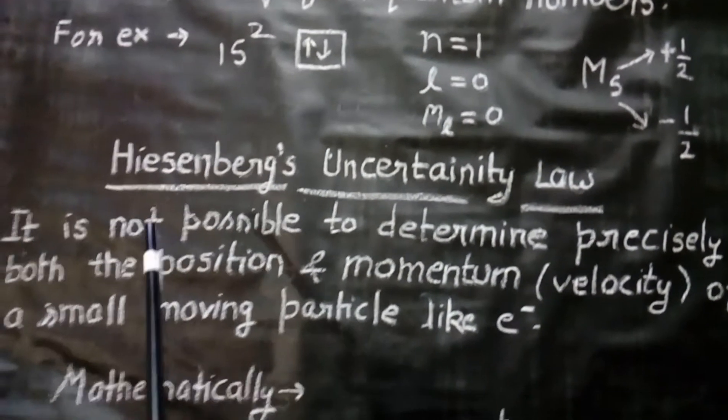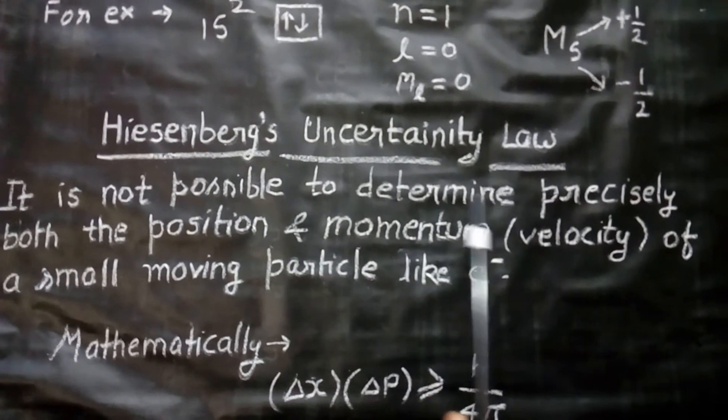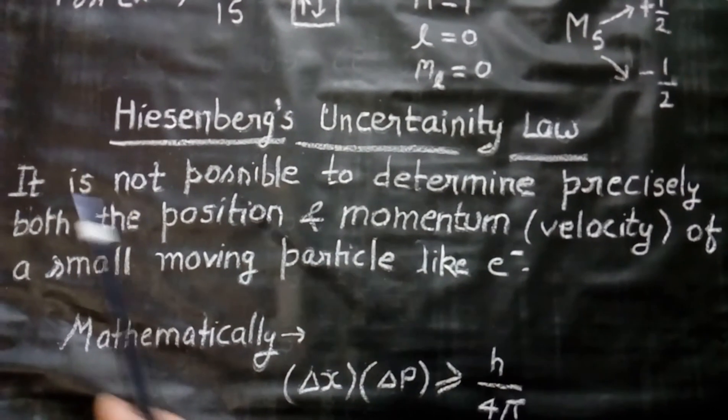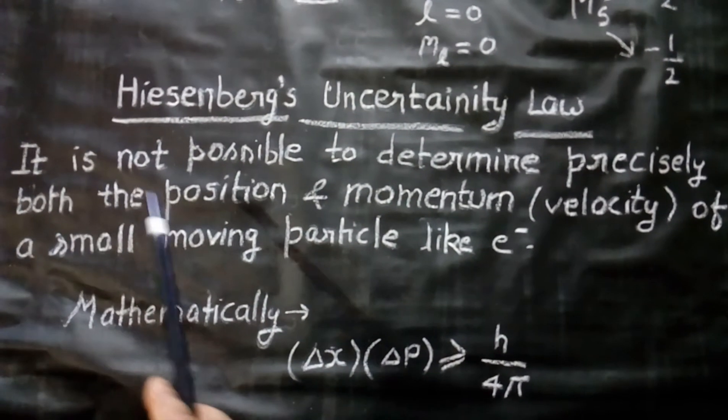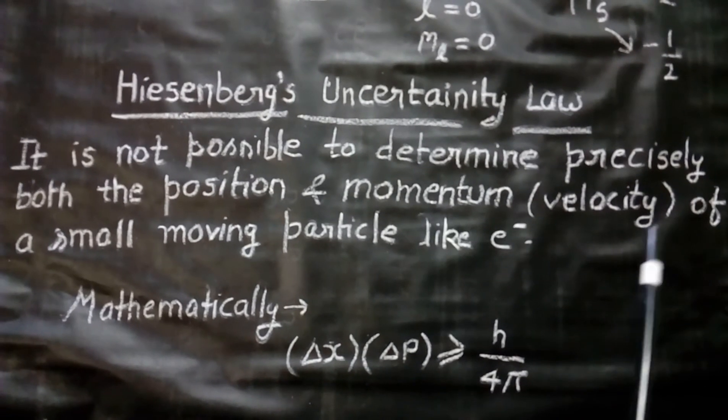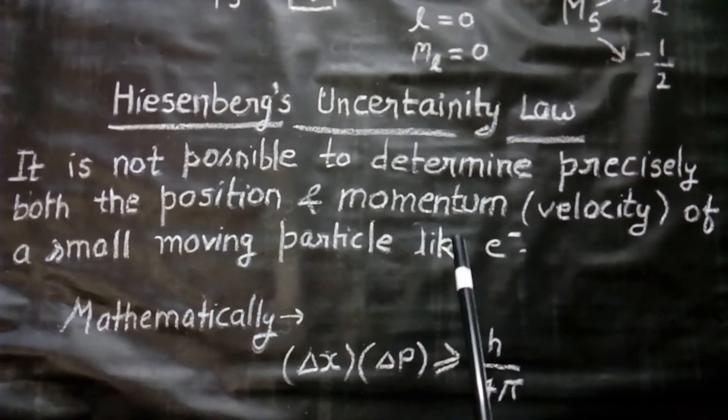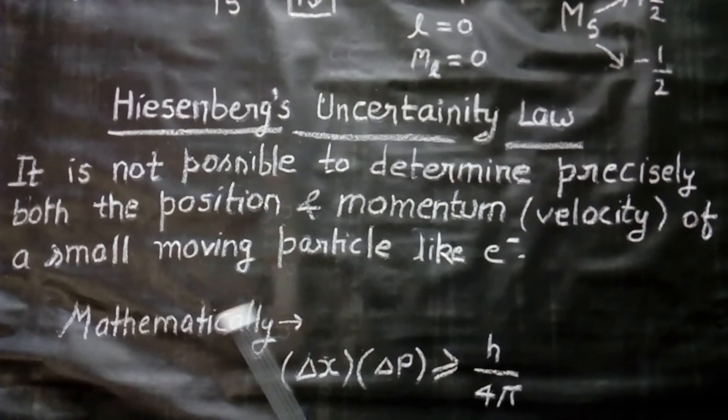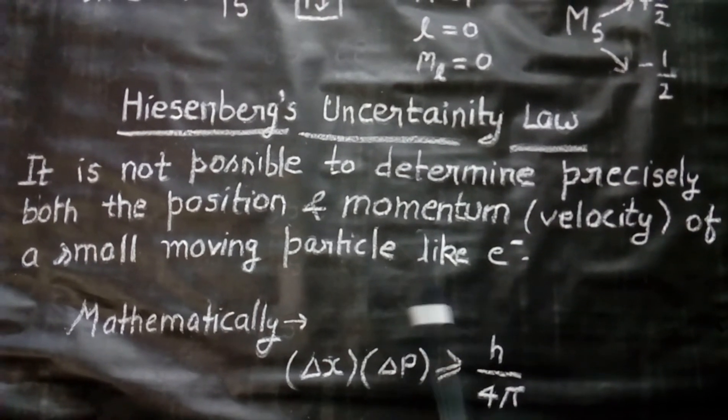Now, we consider Heisenberg's uncertainty principle. According to this principle, it is not possible to determine precisely both the position and momentum or velocity of a small moving particle like electron.